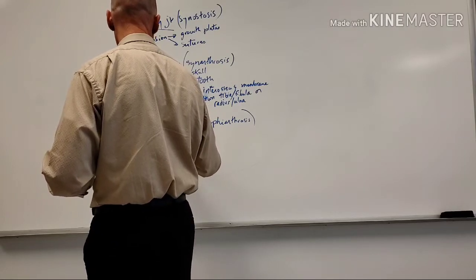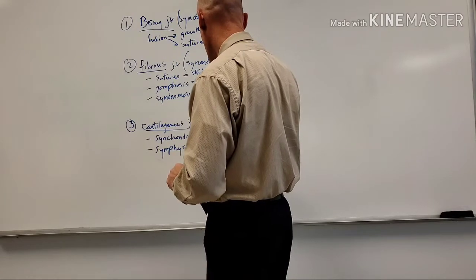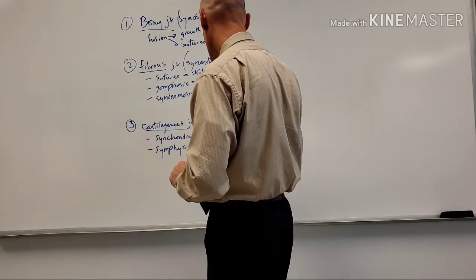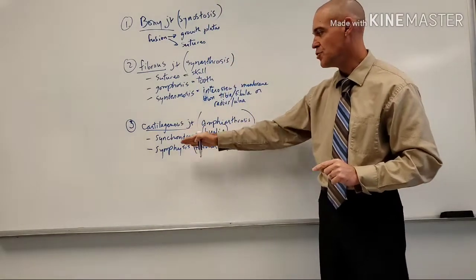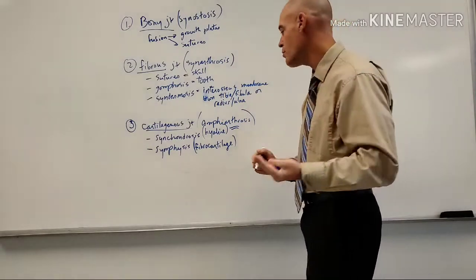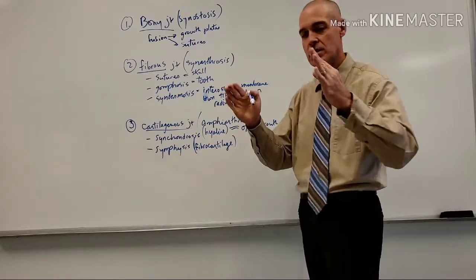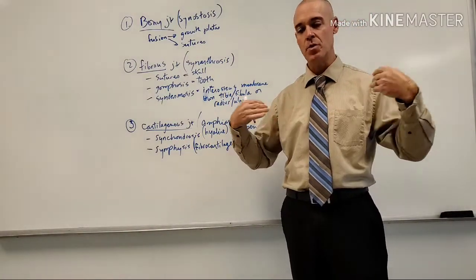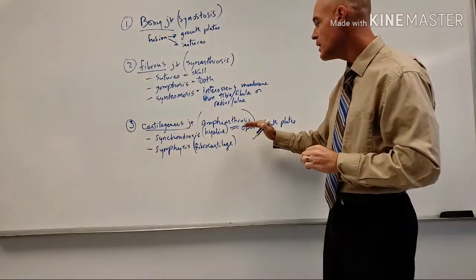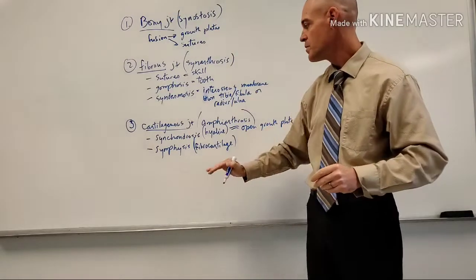Under cartilaginous joints we have two types: the synchondrosis and the symphysis. The synchondrosis is made of hyaline cartilage. Where do we find the synchondrosis? Any open growth plates of the body are classified as a synchondrosis — that's probably the best example. The costochondral joints between the rib bones and the sternum are also synchondrosis joints. When the growth plates fuse, they are reclassified as a bony joint.